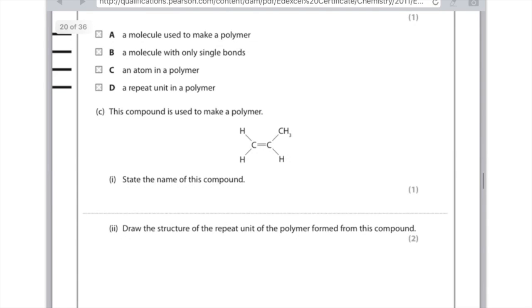This compound is used to make a polymer. State the name of this compound. So let's count up all the carbons: one, two, three. So that means it's going to be pro. And it ends in ene because there's a double bond. So the answer here is propene.